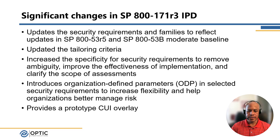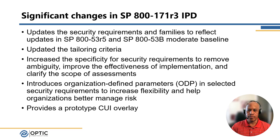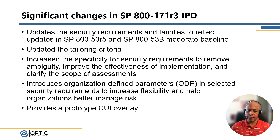The focus has been to increase specificity of the security requirements to remove ambiguity, and a lot of that is just the nature of using 53 as the baseline. It's been updated at the transition from 53 Revision 4 to Revision 5, so a lot of those enhancements and uplift are ported to 171. There's also the introduction of organization-defined parameters, and a prototype overlay which shows the specific tailoring that went into the 53 controls down to the 171.